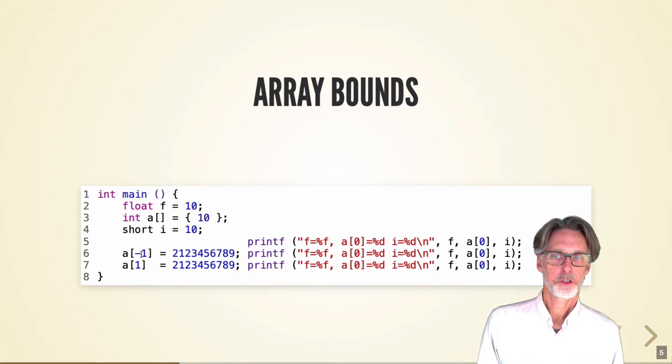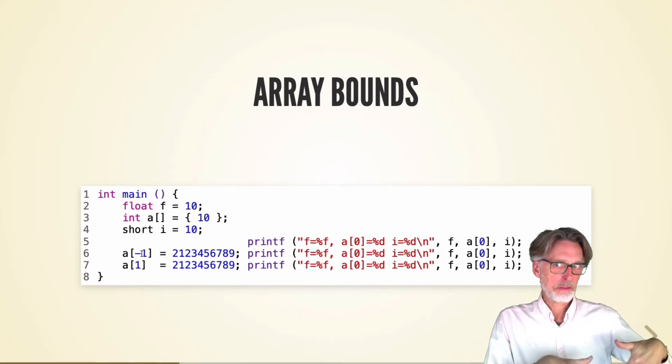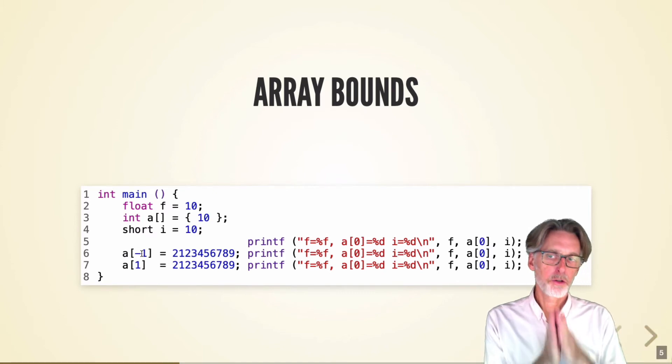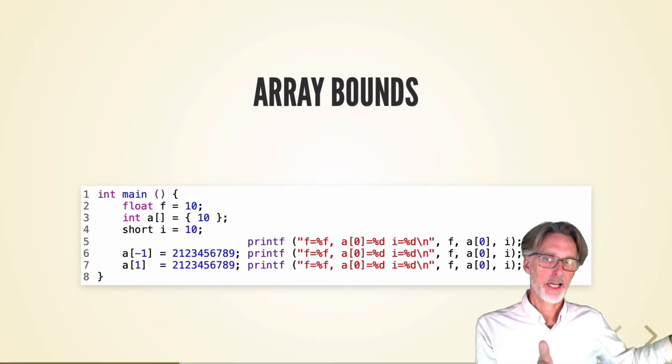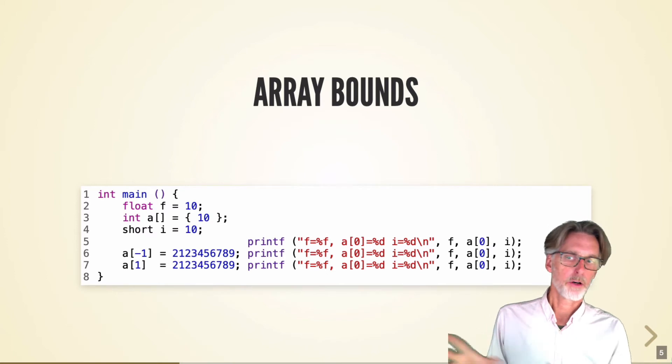And in between, I'm going to update illegal values of the array. So first, we'll go to A minus 1. And then we'll go past A0 into A1. Depending upon the layout of memory, I'll either affect F or I in each case.